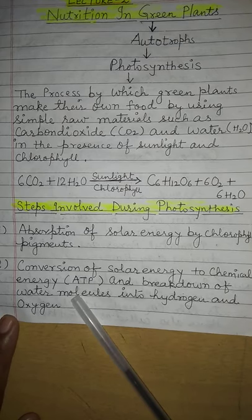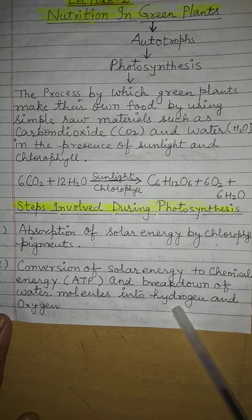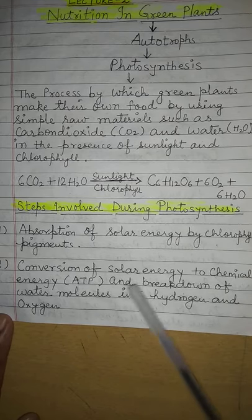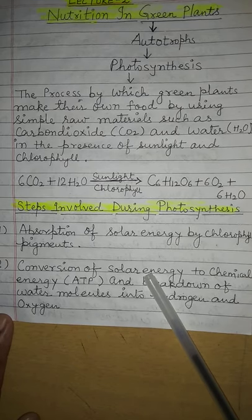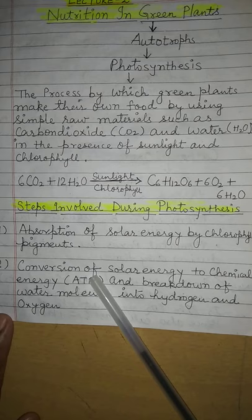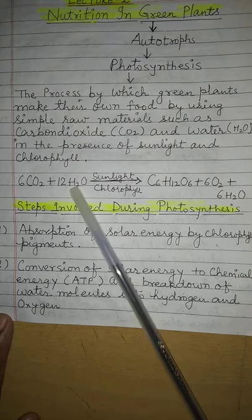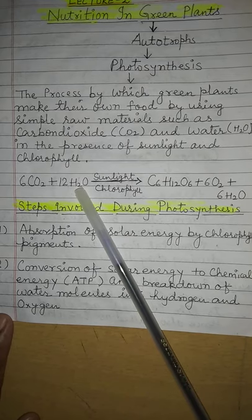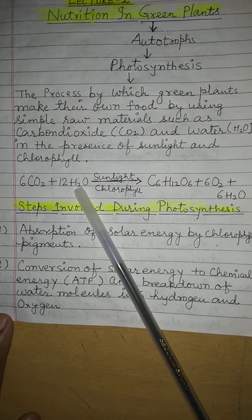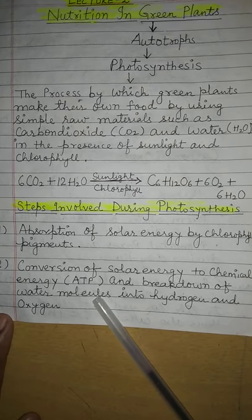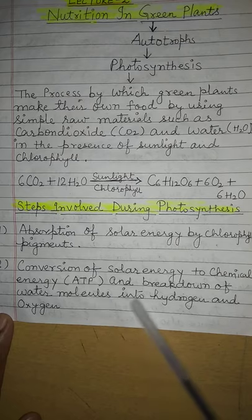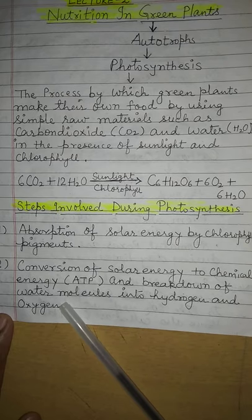At the same time, the second step also involves the breakdown of water molecules into hydrogen and oxygen. When solar energy is converted into chemical energy, simultaneously the water molecules involved in photosynthesis break down and release hydrogen and oxygen.